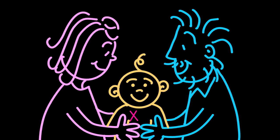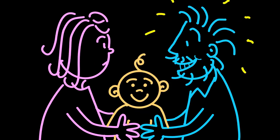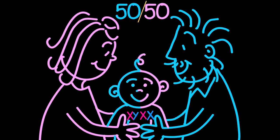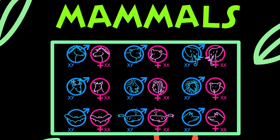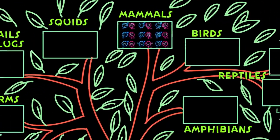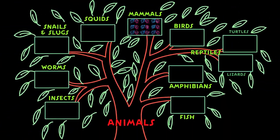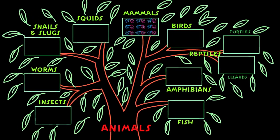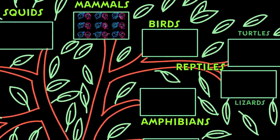Since females only have X's to pass on in their egg cells and males can give either an X or a Y in their sperm cells, the sex is determined by the father and the chance of producing a male or female is 50/50. This system has worked well for mammals, but throughout the tree of life we can see other systems that have worked just as well for other animals.